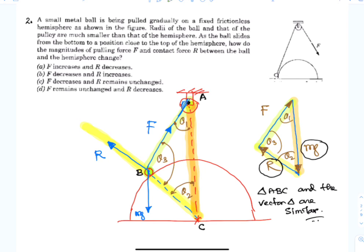It has been asked how do the magnitude of the pulling force and the contact force change. So here F decreases. As you see this side AB decreases, so this force F decreases.